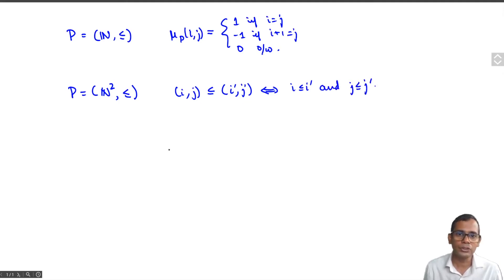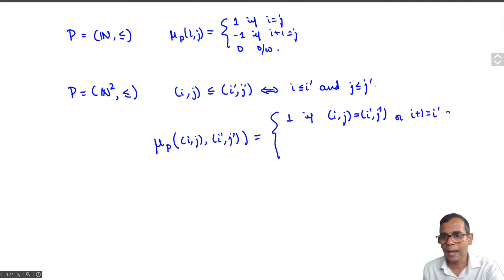In this case you can show that mu_p((i,j),(i',j')) is equal to 1 if (i,j) equals (i',j'), but it's also 1 in another case: (i+1, j+1) equals (i',j').